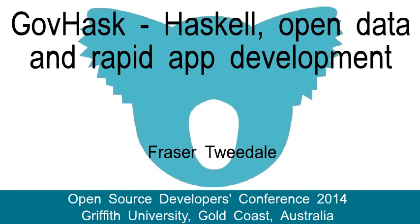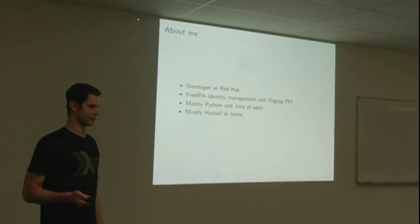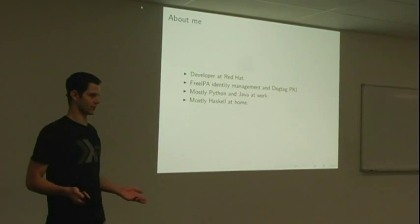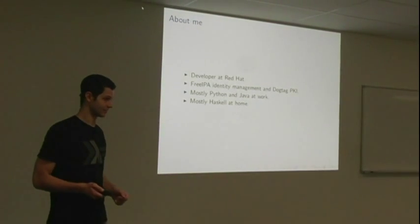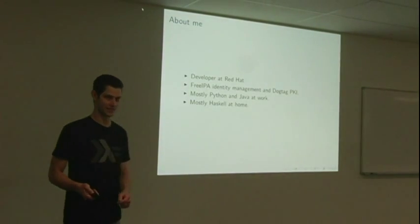My name's Fraser. So a bit about me. I'm a developer at Red Hat. I work on the free IPA identity management suite and the dog tag certificate system. At work, I mainly use Python and Java, but in my free time, I'm writing a lot of Haskell.